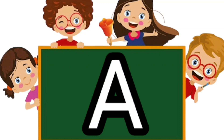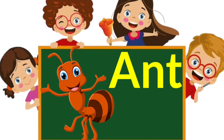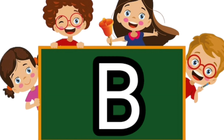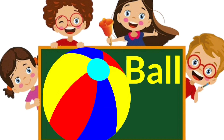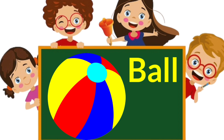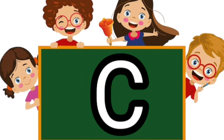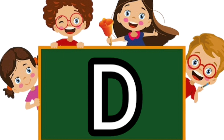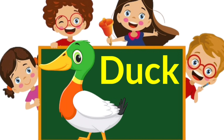A. A is for Ant. B. B is for Ball. C. C is for Camel. D. D is for Duck.